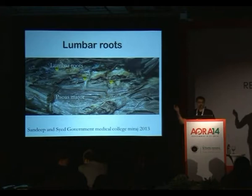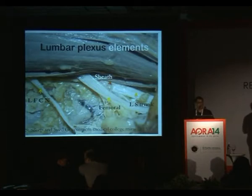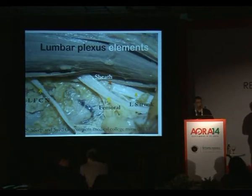As they emerge from the lateral side of the psoas major muscle, you can see the lateral femoral cutaneous nerve, the femoral nerve, and the lumbosacral trunk. You can see how distinctly these are placed away from each other, unlike the brachial plexus, which are very compact structures in the upper limb.